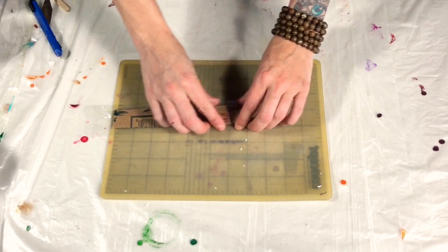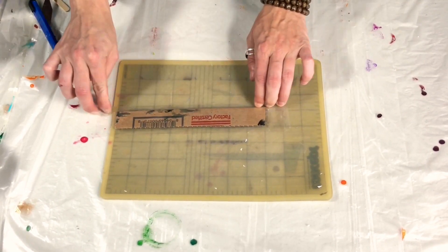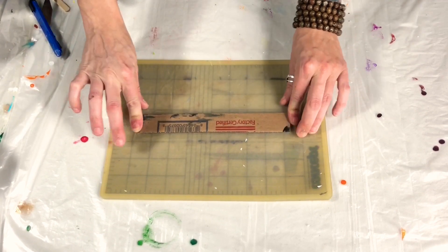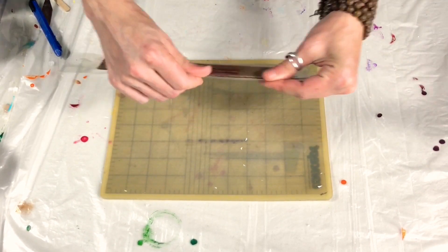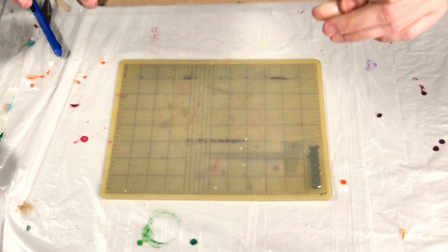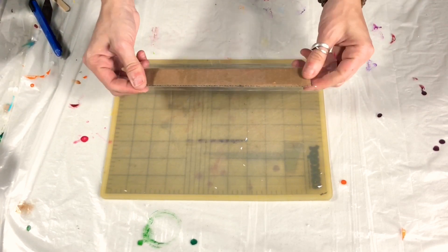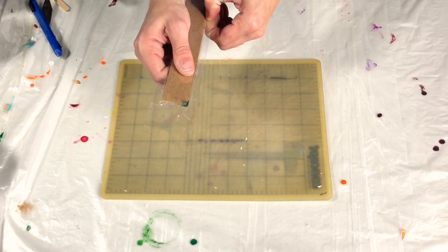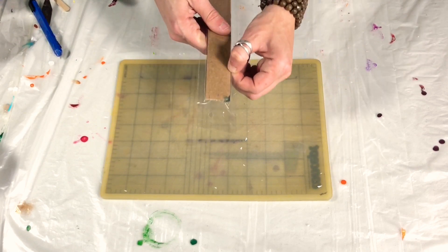You don't have to worry about how much it hangs over because we'll trim it before we use it. So now I have a piece of cardboard that's covered in shipping tape which then makes it semi-waterproof.